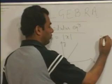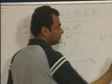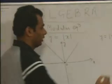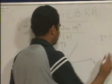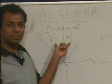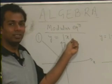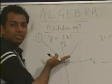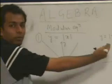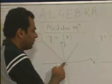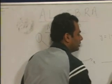If y is equal to mod of x minus 1, we take the graph of y equal to mod of x and subtract 1. Each and every point shifts by 1 unit in the downward direction, so the same V-shaped graph starts at minus 1 instead of the origin.